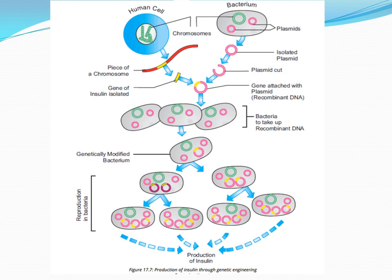The next step involves the recombinant DNA — the vector and the gene of interest together — now known as recombinant DNA. This recombinant DNA is inserted back into the host, which is bacteria in this case. By inserting this recombinant DNA into the bacteria, the bacteria now becomes genetically modified. If we use viruses, it becomes a genetically modified bacteriophage; if bacteria, it is a genetically modified bacterium.